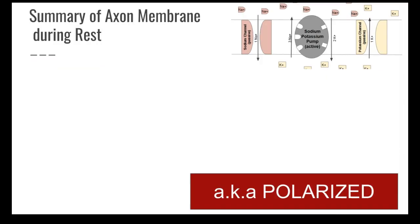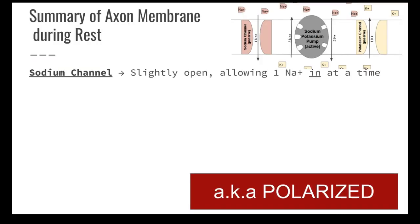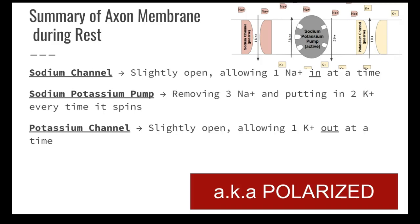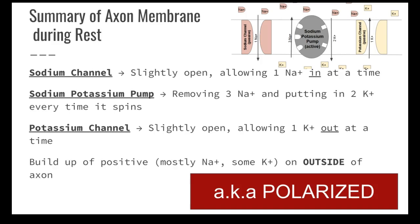To quickly review what's happening at rest or polarization: the sodium channel is slightly open, one sodium is coming into the axon at a time. The sodium-potassium pump is always spinning — three sodium leaving and two potassium coming in. The potassium channel is slightly open as well, with one potassium going out. As that happens, we're building up a positive charge on the outside, and we end up with that negative 70 millivolt resting potential.